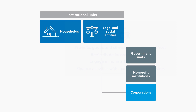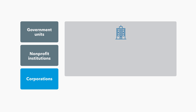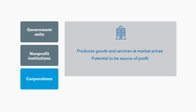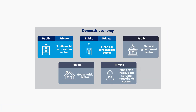Corporations. The key to classifying a unit as a corporation in macroeconomic statistics is not its legal status. A unit is classified as a corporation if: one, it is a market producer that produces goods and services at market prices, and two, it has the potential to be a source of profit or other financial gain to its owners. Therefore, in macroeconomic statistics, the term corporation is not necessarily used in the same way as in the legal sense. All corporations are part of the non-financial corporation sector or the financial corporation sector, depending on the nature of their primary activity. Institutional units that qualify as corporations and are directly or indirectly controlled by government units are public corporations.